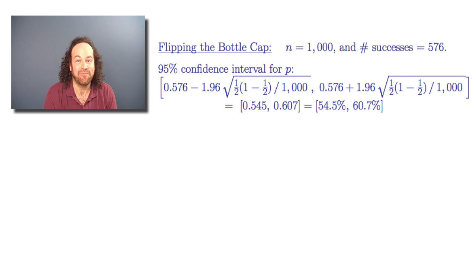And in this case, if we want a 95% confidence interval, then it would go from p-hat minus 1.96 times the square root of p times 1 minus p over n, but when p equals a half, which is from 54.5% up to that same thing plus the 1.96, which in this case is a little over 60%.